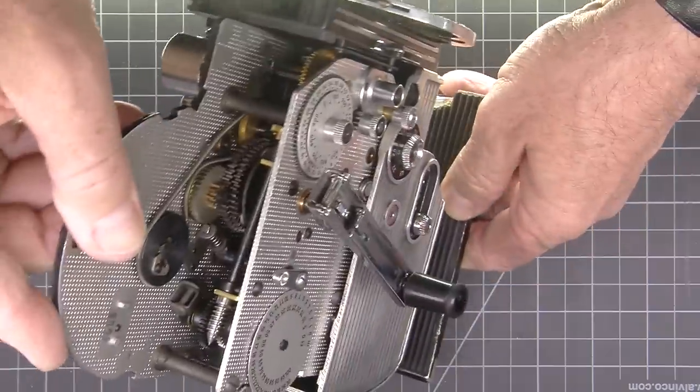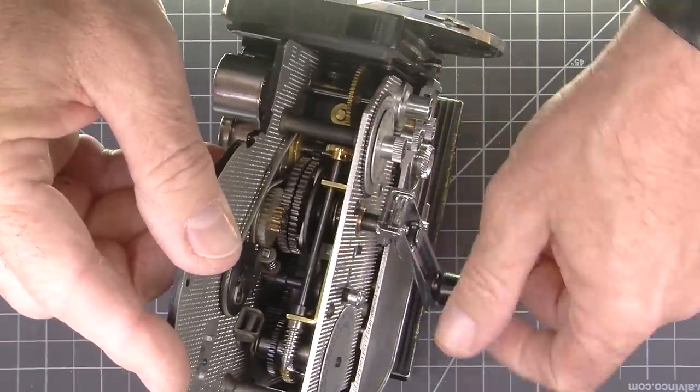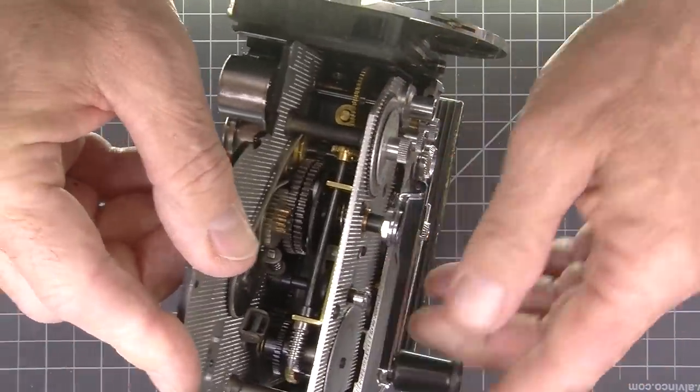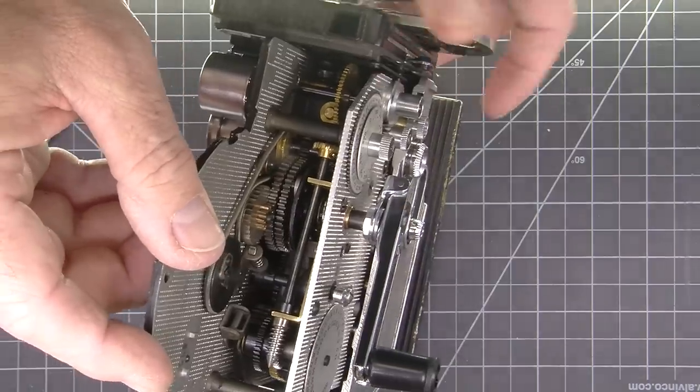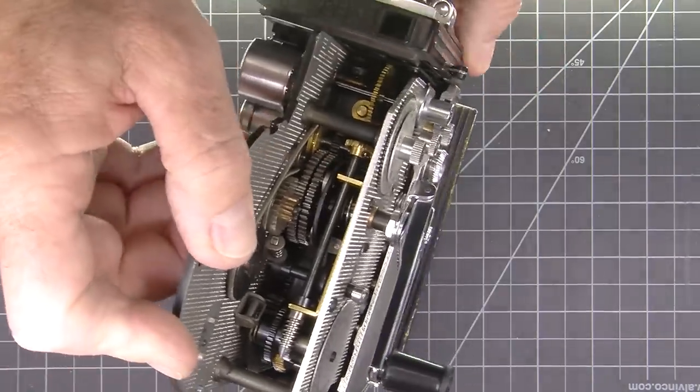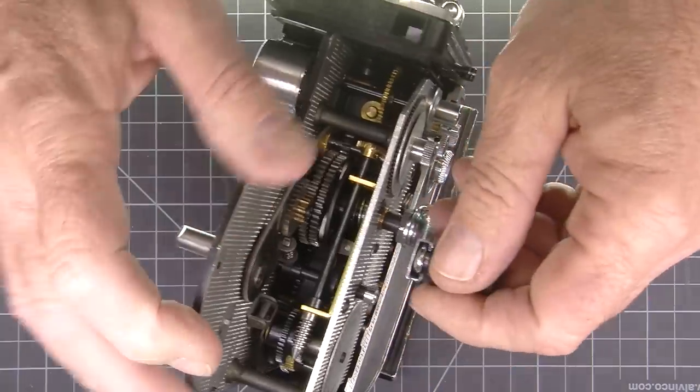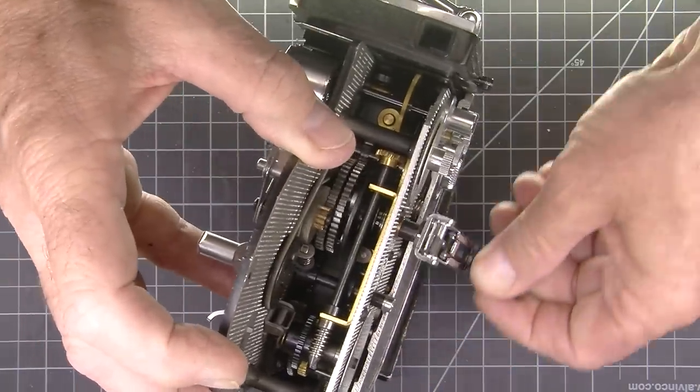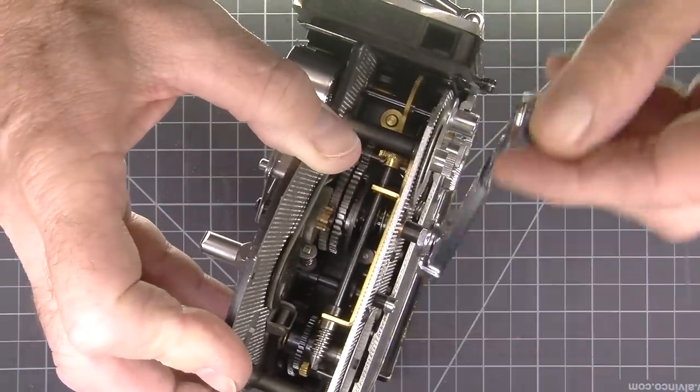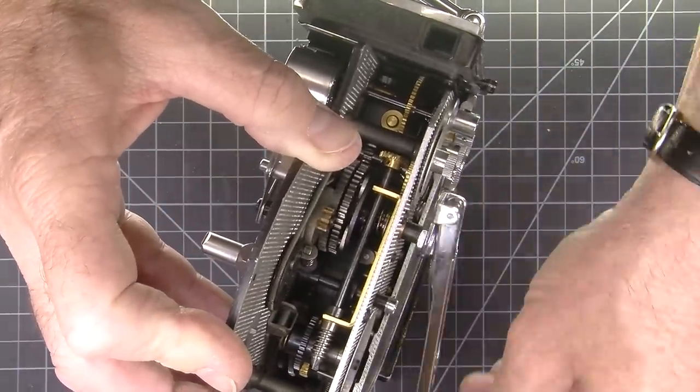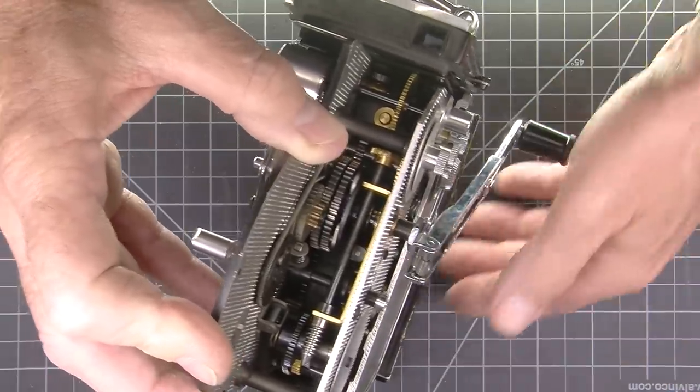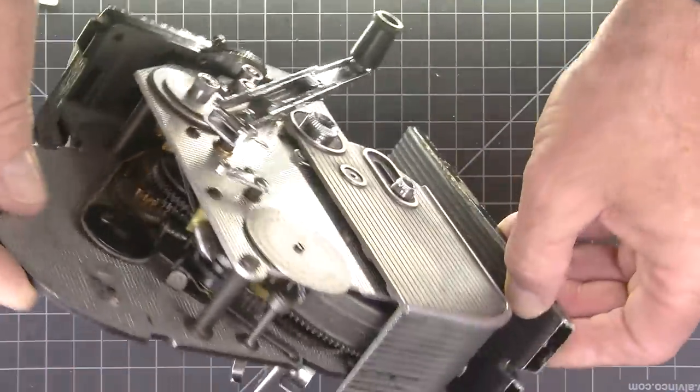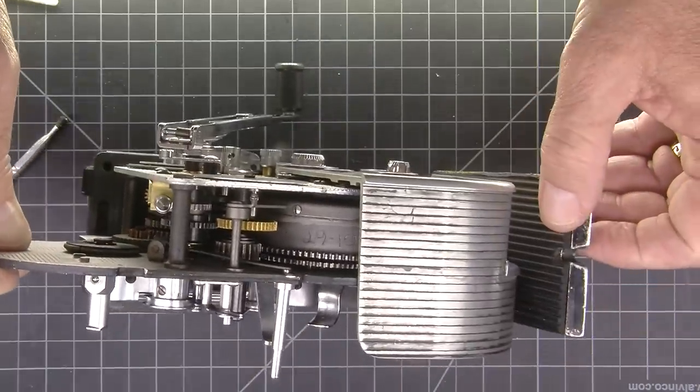And the inside. So that's what your Bolex looks like inside, as much as you can see.